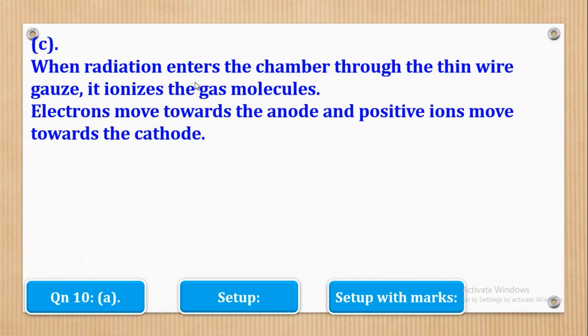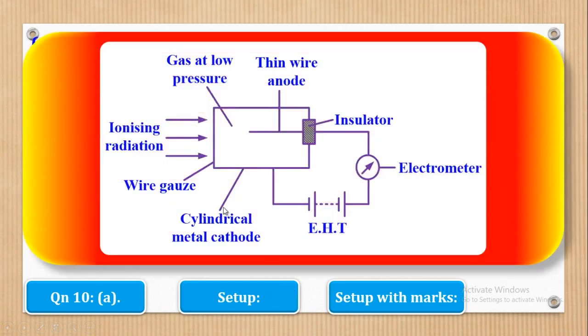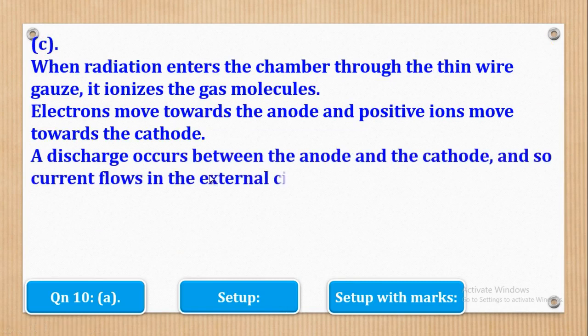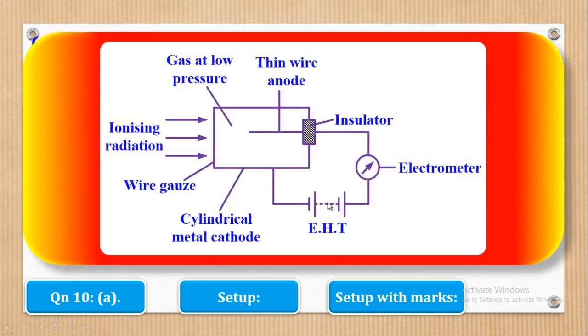So we shall see that the electrons which are the negative ions are moved towards the anode. Remember anode is positive. Remember cathode is negatively charged. So that means that the electrons which are negatively charged will move towards the anode which is positively charged, while the positive ions will move towards the cathode which is negatively charged. A discharge occurs between the anode and the cathode and so current flows in the external circuit.